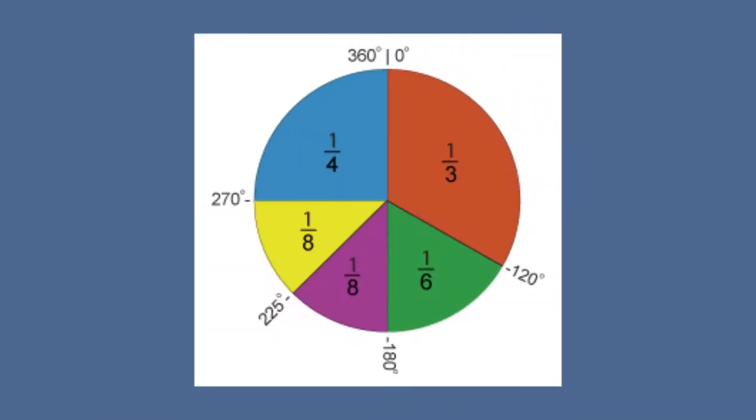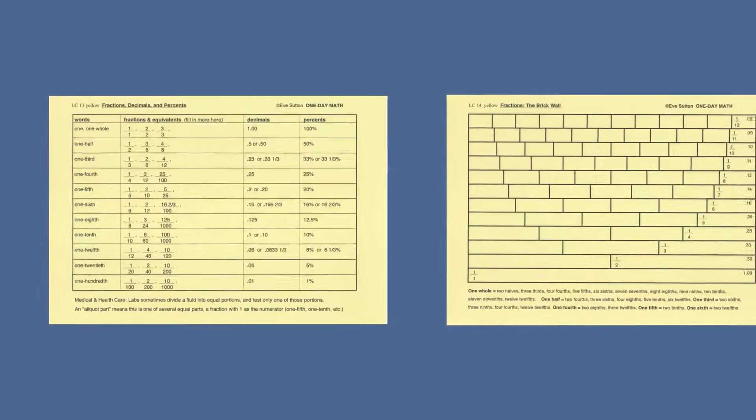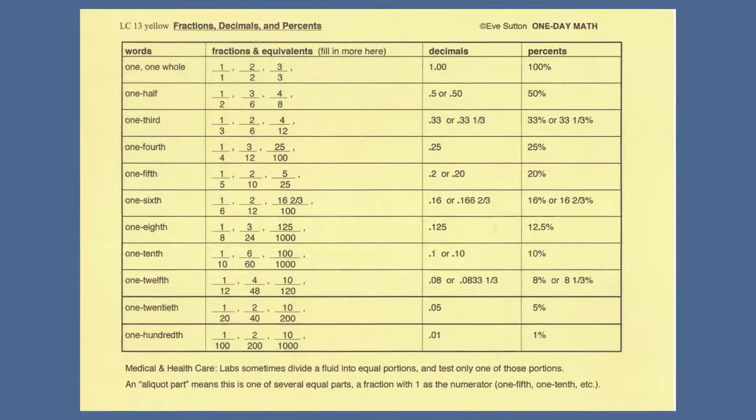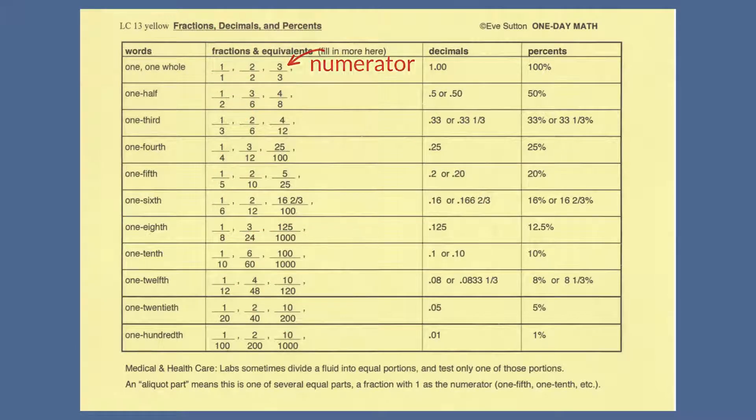Look at the pie chart on the back of your color illustration card. You can see that each wedge is a fraction of the whole circle. Now look at the two lesson cards. Notice that each fraction can be written in words or shown many ways, as a diagram, as a numerator and denominator, as a decimal number, or as a percent.